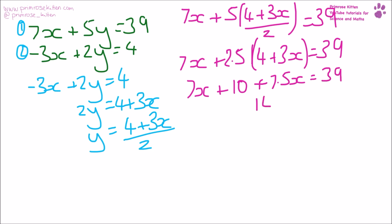So 14.5x equals 39 minus 10, which is 29. So x equals 29 divided by 14.5, which gives us 2. Now we know what x is.